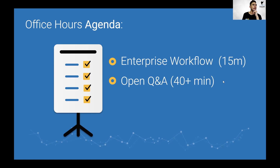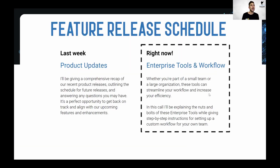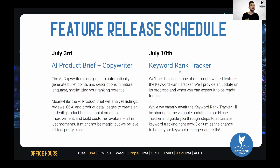This week is a little bit light — we're playing around with notifications inside Data Dive and something I was testing isn't working, so we're going back to what we were doing previously. This week is all about enterprise tools and workflow. Next week you'll want to mark your calendar — I'm going to be going through the AI product brief and AI copywriter, highly anticipated tools that beta users already have access to. Then on July 10th I'm going to be showing you the keyword rank tracker, which is really powerful. We've been working on this for almost a quarter and a half. You can register at datadive.tools/officehours.